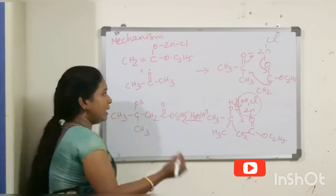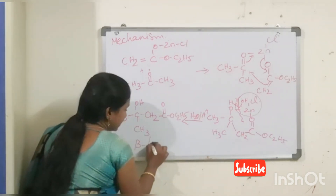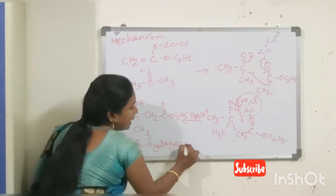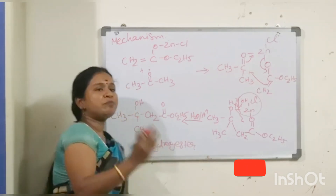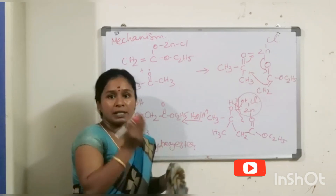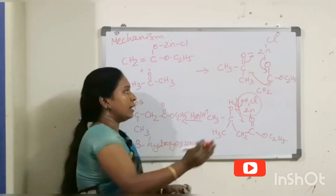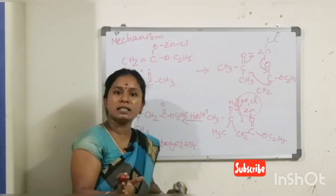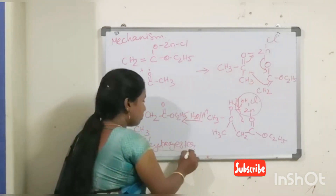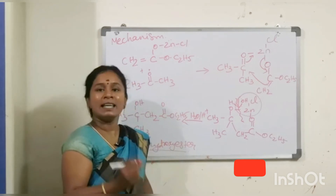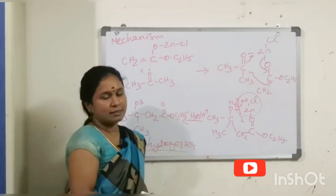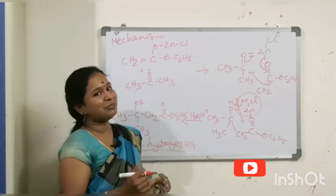After hydrolysis, the beta-hydroxyester is formed — specifically with the OH at the beta position and the ester group (–C(=O)–O–C₂H₅) intact. This completes the Reformatsky reaction: carbonyl compounds react with alpha-haloester in the presence of zinc metal, using inert solvents like benzene or ether, to give beta-hydroxyester. Thank you, students.